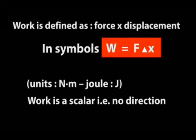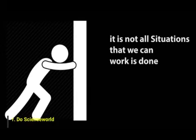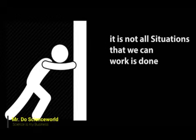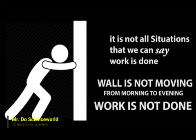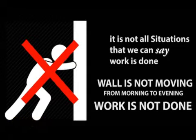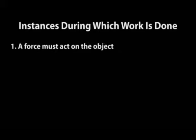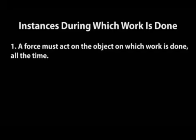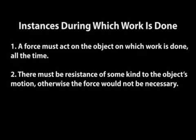Let's look at some instances during which work is done, because it is not all situations where we can say work is being done. For example, if a man tries to push a wall and the wall is not moving — the man pushes from morning to evening but the wall has not changed direction — there is no work done. The instances where work is done: number one, a force must act on the object; two, there must be resistance of some kind to the object's motion.